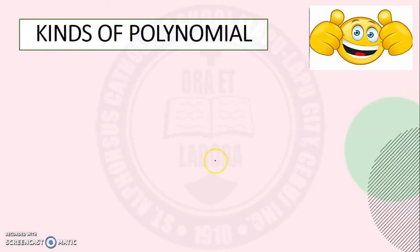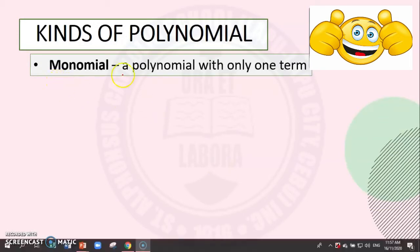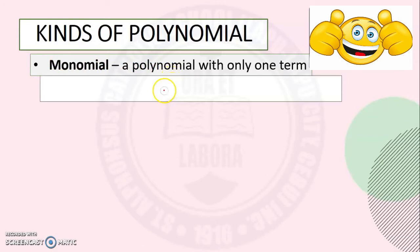Now, there are different kinds of polynomials. The first one is monomial. A monomial is a polynomial with only one term. Examples of monomials are 2a, 3x squared y, and one-half r.